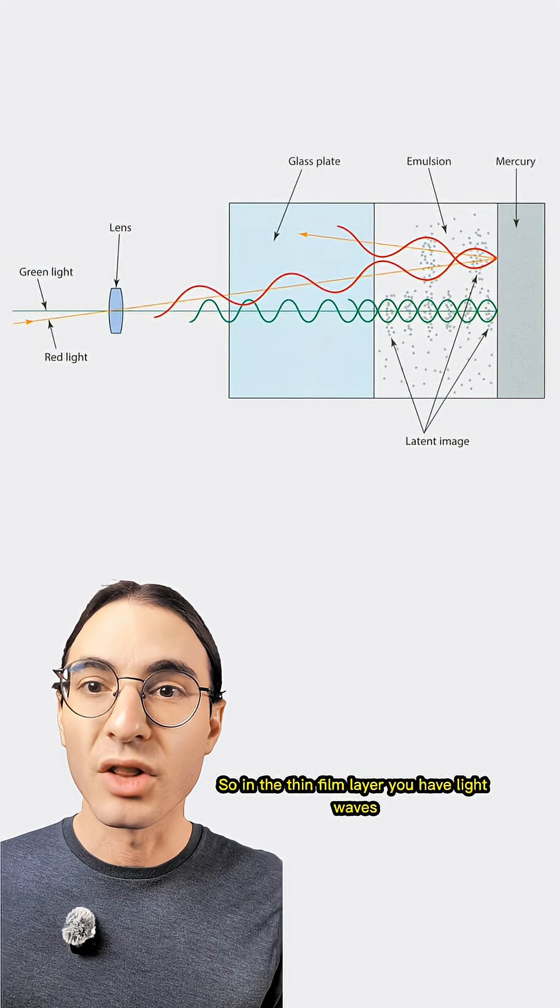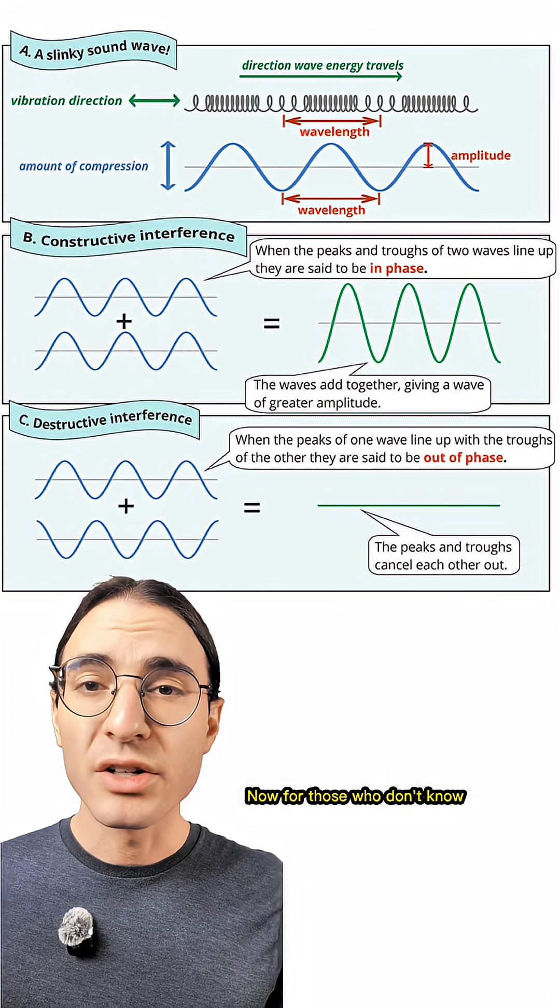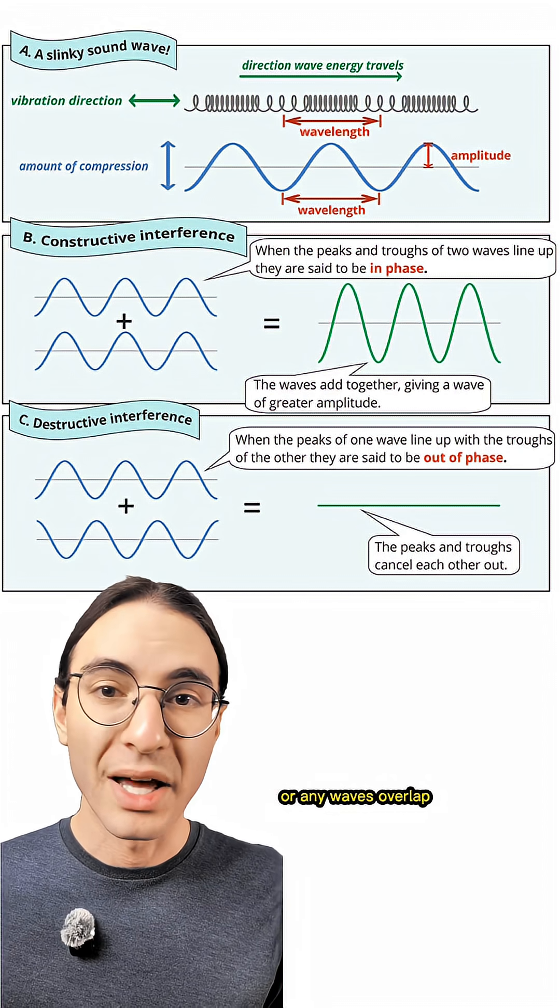So in the thin film layer, you have light waves coming in and light waves coming out, a recipe for interference. Now for those who don't know, interference is what happens when light waves, or any waves, overlap.